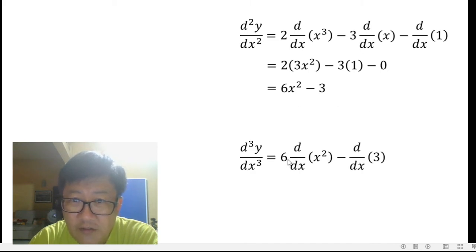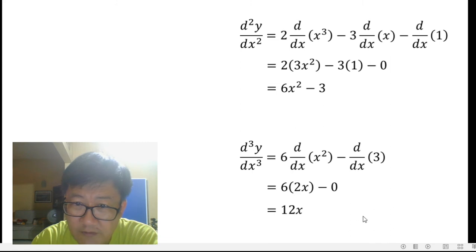When you differentiate a third time, it's 6, the differentiation of x squared minus the differentiation of 3. This is a constant, so it will turn out to be a 0. When you differentiate x squared, you get a 2x, so that's what you have there. The 0 comes because of a differentiation of a constant. Tidy this up, and you get 12x.